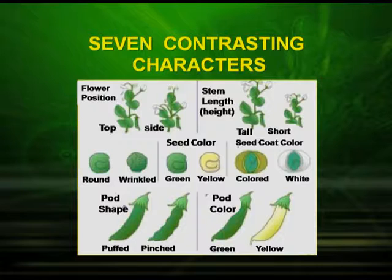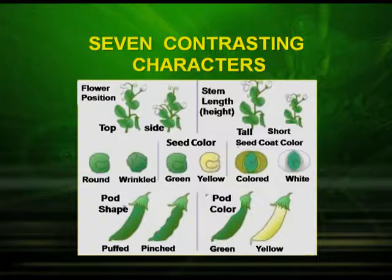What were the seven contrasting characters studied by Mendel? First, flower position — terminal or axillary. Second, stem length — tall or short. Third, seed shape — round or wrinkled. Fourth, seed color — green or yellow. Fifth, seed coat color — colored or white. Sixth, pod shape — puffed or pinched. Seventh, pod color — green or yellow. These were the seven contrasting characters studied by Mendel.